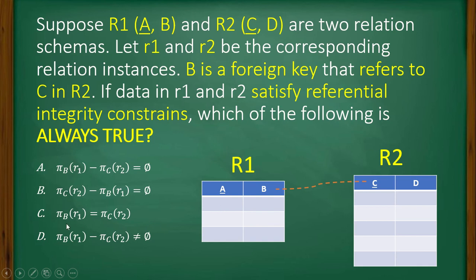Next is select B from r1 equal to select C from r2. Again, same explanation. If they are having different number of rows, that means there will be different number of values, so they are not going to be equal.